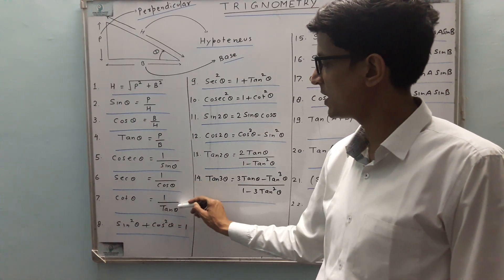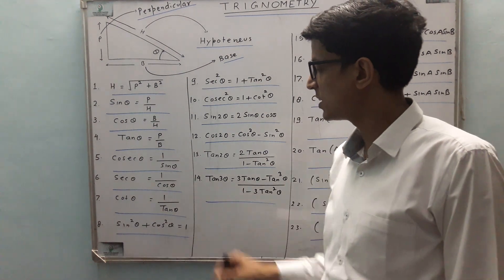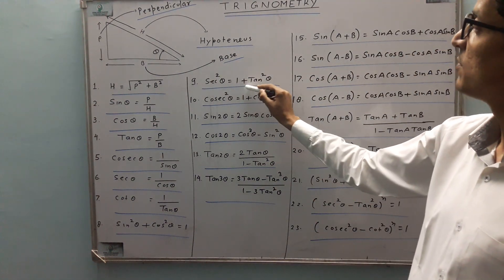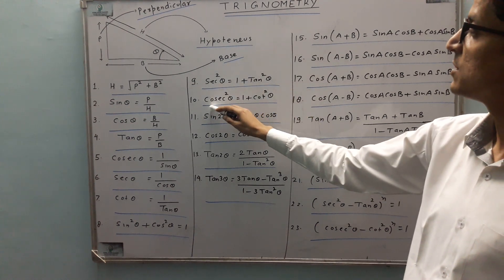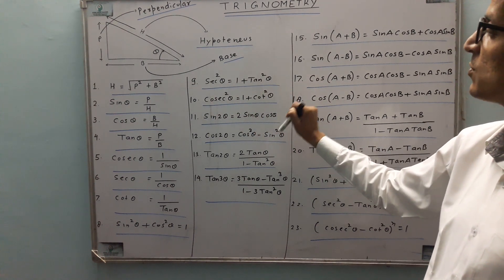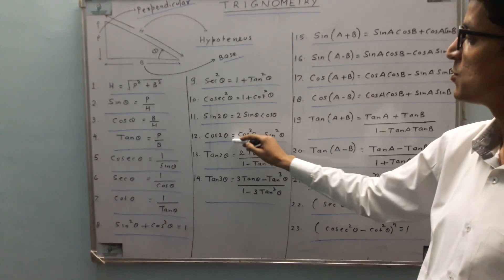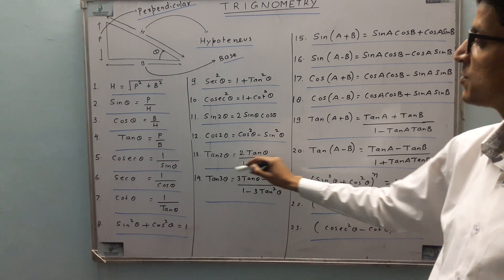Sixth is sec theta is equal to 1 upon cos theta. Seventh is cot theta is equal to 1 by tan theta. Eighth is sin squared theta plus cos squared theta is equal to 1. Ninth is sec squared theta is equal to 1 plus tan squared theta.